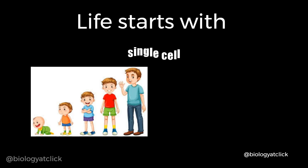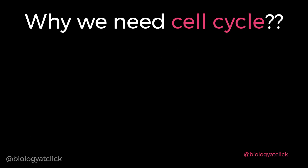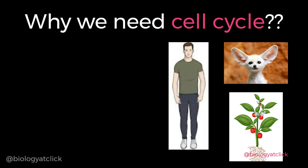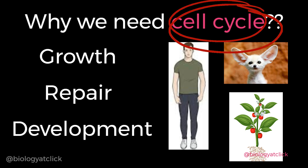Growth and reproduction are characteristics of all cells, in fact all living organisms. All living organisms, may it be human, plants or animals, require a continuous supply of new cells for growth, repair and development. The process through which these cells are generated is known as the cell cycle.